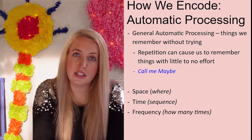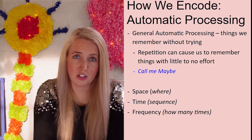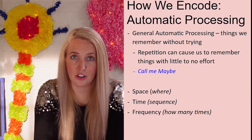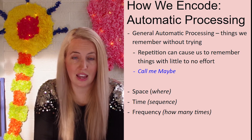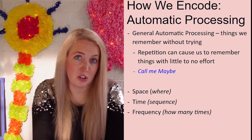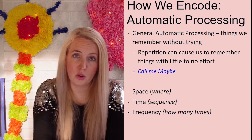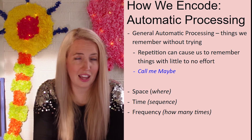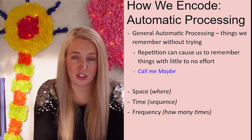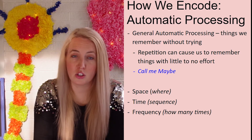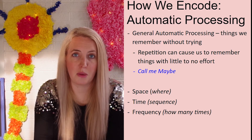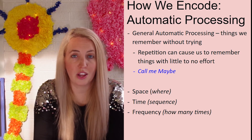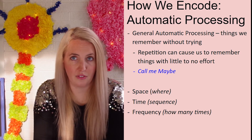Frequency is how many times something occurred. If you turned on the radio and heard a song three times in one day, you might not have been consciously counting, but by the third time you could say, 'Change the station, I've heard this song three times already' — because you automatically processed that information. So space, time, and frequency are three ways we encode pretty automatically.